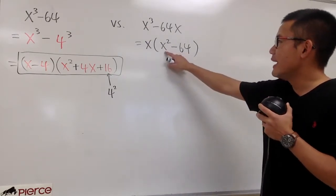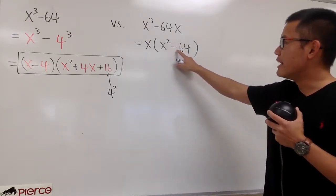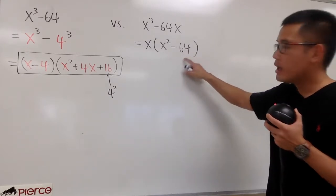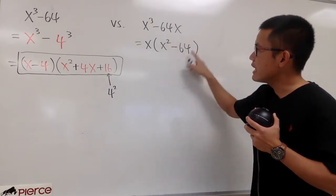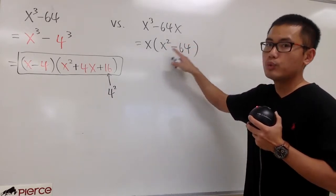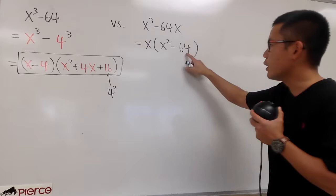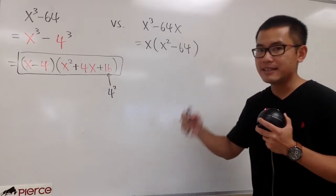No. Because here is x squared, and then this is minus 64. But you see, this is x squared. So, right here, we have to look at the inside as a difference of two squares. Because we can also look at 64 as 8 squared.